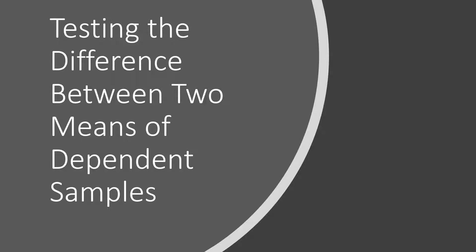We are going to discuss testing the difference between the two means of dependent samples. In the previous discussion, the t-test was used to compare two sample means when the samples were independent. This is a different version of the t-test, used when the samples are dependent — that is, when subjects are paired or matched in some ways.